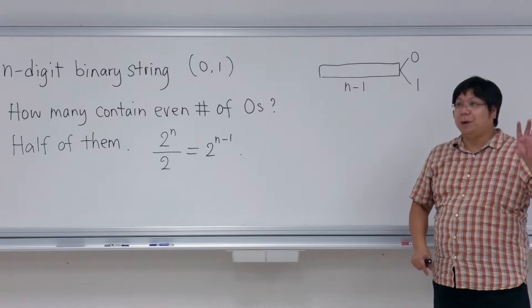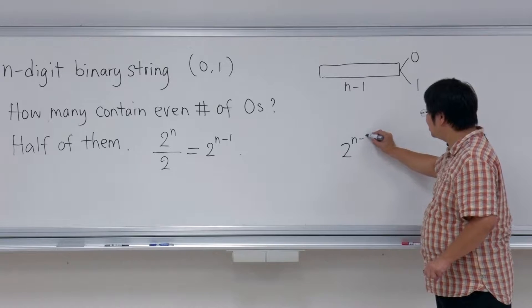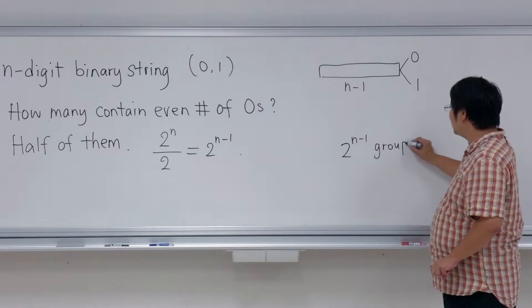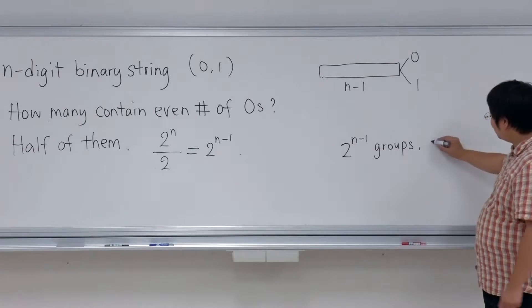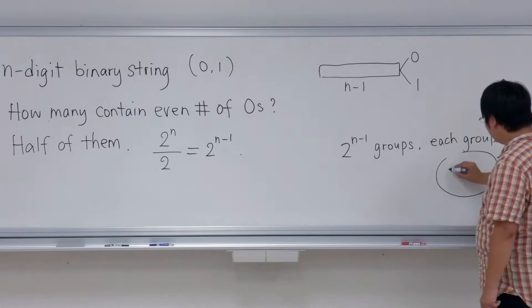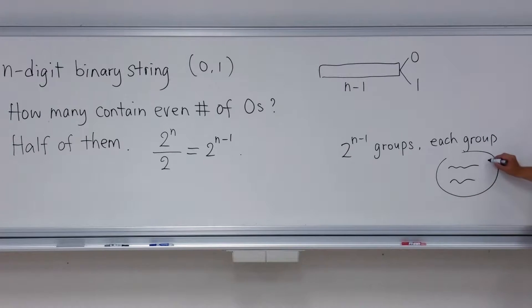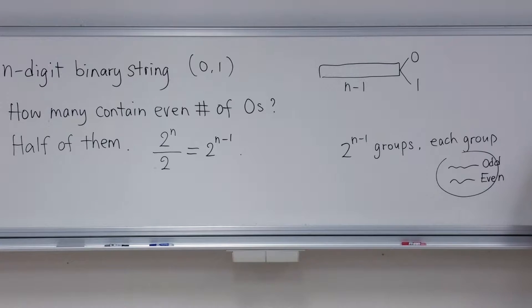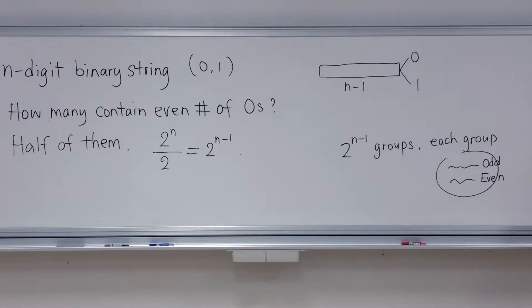There are 2^(n-1) groups. Each group has two strings and exactly one of them has odd number of zeros and the other has even number of zeros. Because each group has exactly one string with even number of zeros, the answer is 2^(n-1).